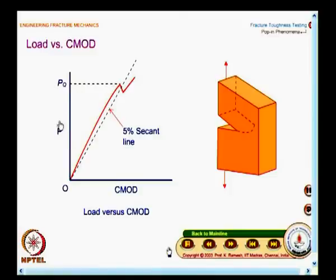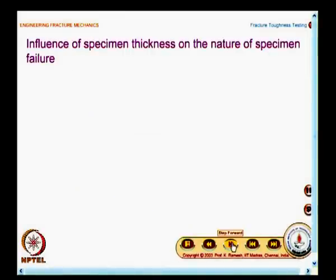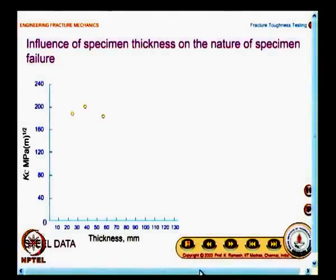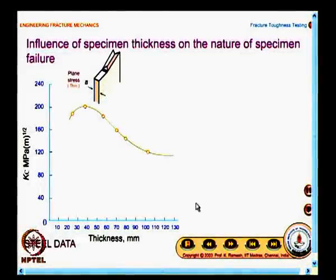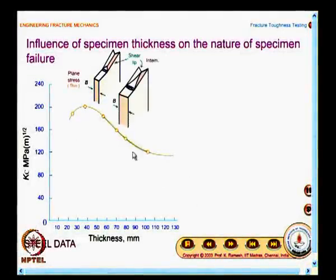The idea of getting the load versus CMOD graph is to find out what value of P to substitute for finding out fracture toughness. You also find that as a function of specimen thickness, the appearance of the fractured surface is different. When you have a complete plane strain situation, you will have a flat fracture surface. For plane stress specimens, prominent shear lips are seen; for an intermediate thickness specimen, it is initially like plane strain and towards the edges you have a shear lip.